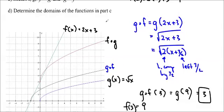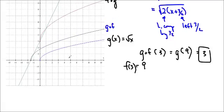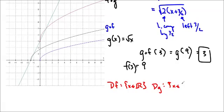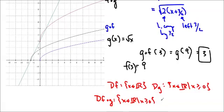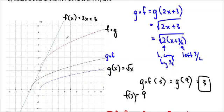Now determine the domains of the functions in part c — we'll go ahead and do that using the graph. The domain of f is x in ℝ, it's the line. The domain of g is x in ℝ such that x is greater than or equal to 0, because that's root x. The domain of f of g — looking at the graph — is x greater than or equal to 0. And for g of f, it's x in ℝ such that x is greater than or equal to negative 3 over 2. Of course, this graphing approach is inefficient if we don't have the graphs, and a different method for finding domains does exist.